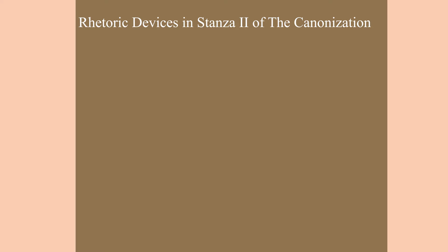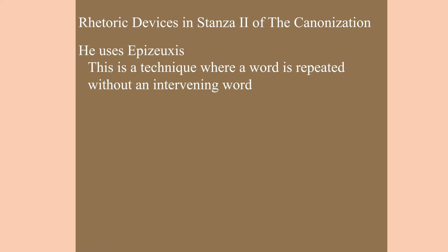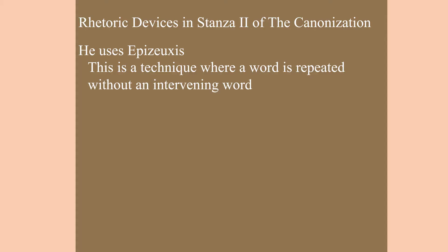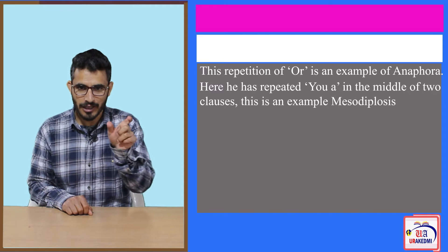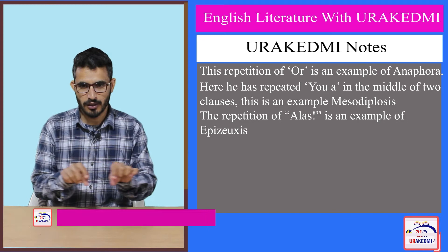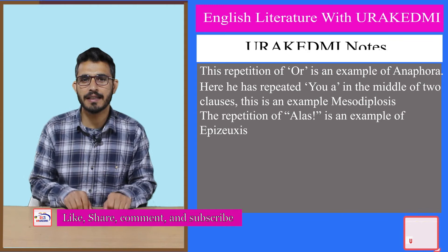Coming to the second stanza, he uses the rhetorical device epizeuxis, which means the repetition of a word without an intervening word. The very first verse reads 'alas, alas, who is endued by my love.' The repetition of 'alas' and 'alas' without any word between them is an example of epizeuxis.